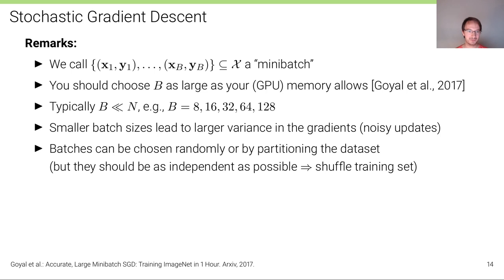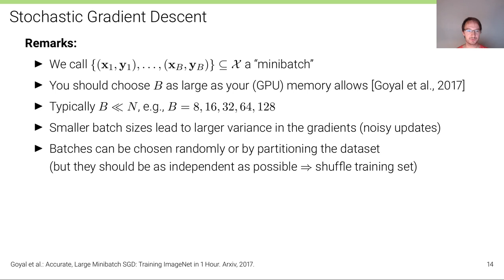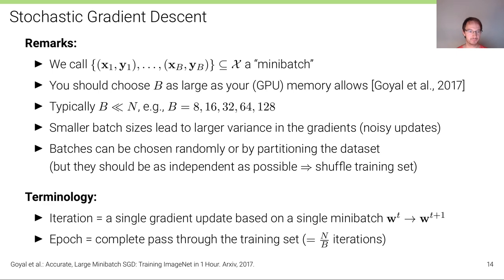Batches can be chosen randomly or by partitioning the dataset prior to optimization. We need to shuffle the dataset before partitioning, because data is often recorded sequentially and there is correlation between elements. Ideally, and theoretically more valid, we choose completely randomly at every mini-batch update, though pre-partitioning is more memory efficient for dynamic loading into GPU memory.